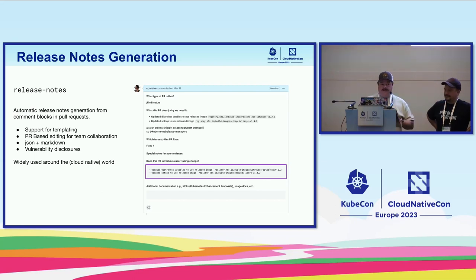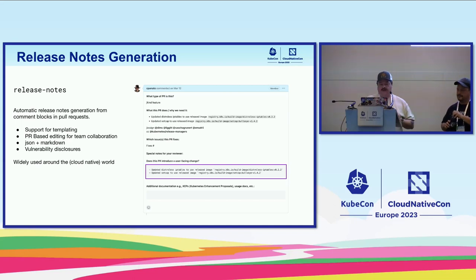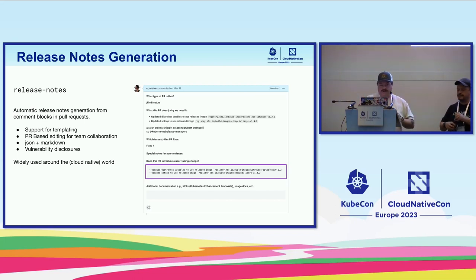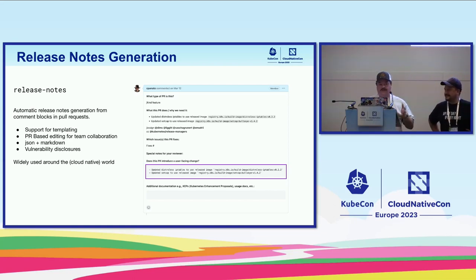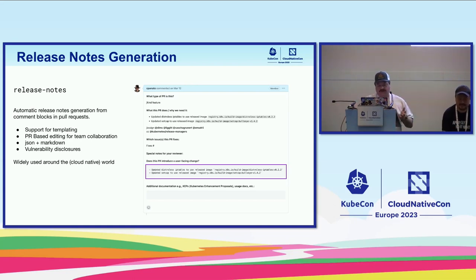If you think about your own open source project on GitHub, you need to add this section in your PRs because the release notes tool will fetch all PRs in that time range looking for that specific section. If you don't enforce people to use it, the generated release notes will be empty. In Kubernetes we have a bot that enforces release notes to be written or explicitly skipped. We're working on a GitHub App that people can add to their repository to enforce that.